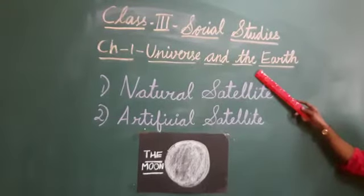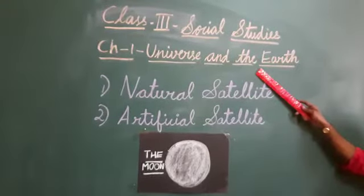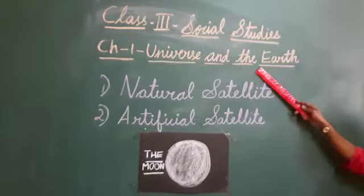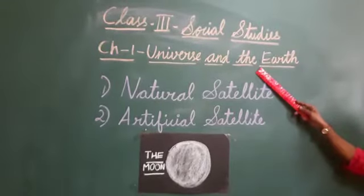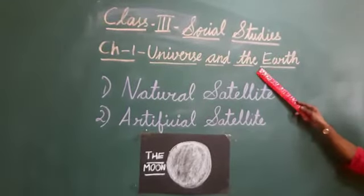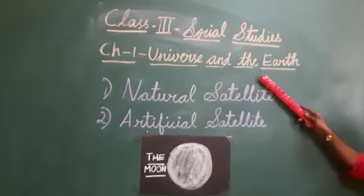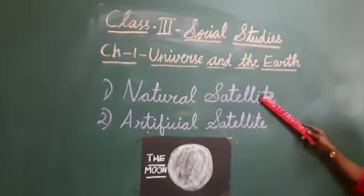Happy day, children. In the previous video, we saw about the celestial bodies — the sun, the stars and the solar system. Now we are going to see about the satellites.